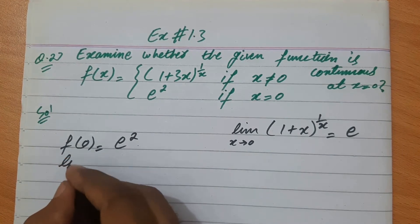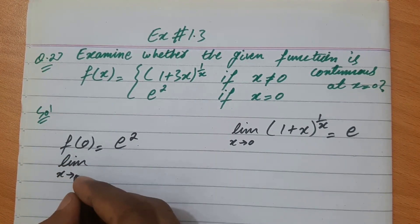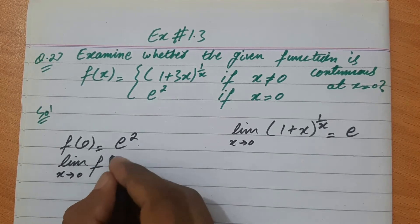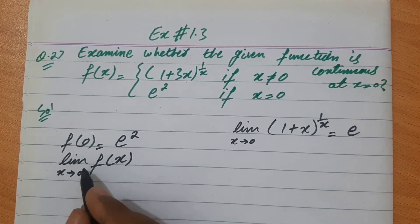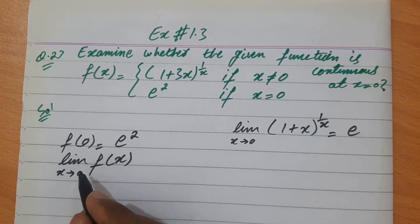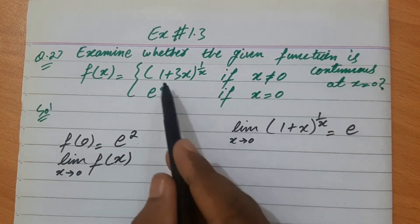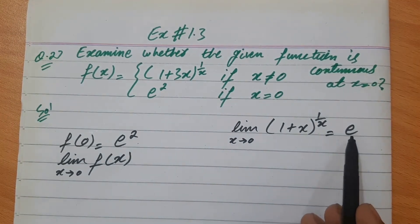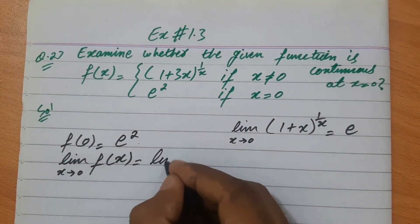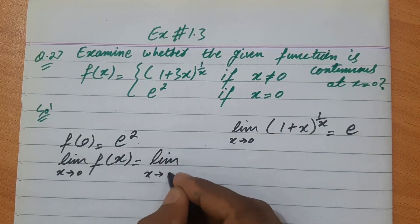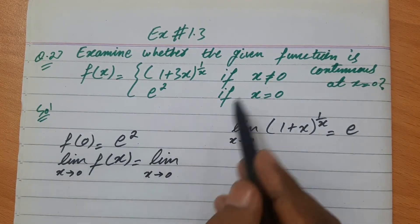अब limit find करते हैं: limit x→0 f(x)। हम direct limit find करते हैं जब left limit और right limit equal हों। यहाँ पूरी term को e की form में बनाना है, तो left और right limit equal होंगी। इसलिए हम directly limit x→0 apply करते हैं।